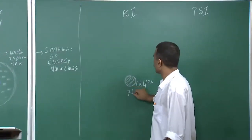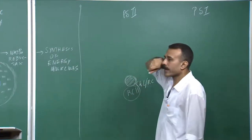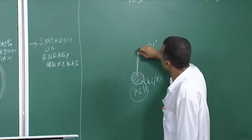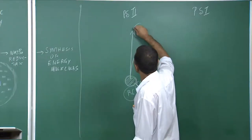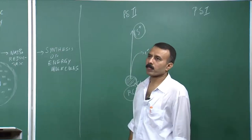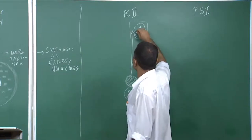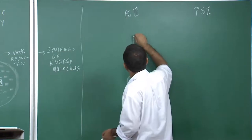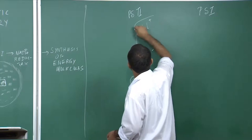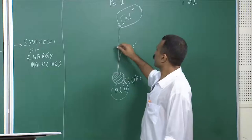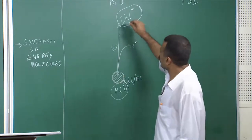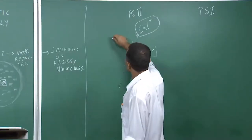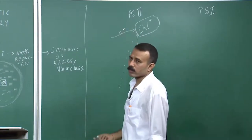Now, if this is a reaction center, what is the exact chemical event taking place? This chlorophyll molecule gives out an electron and becomes positive. While this chlorophyll molecule is devoid of an electron, it has essentially got oxidized. Now, this one has already donated an electron; in order to bring it back to its ground state, it has to be supplied with an electron. Once it gets an electron, it will come back to its ground state.